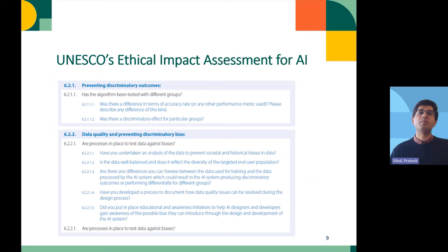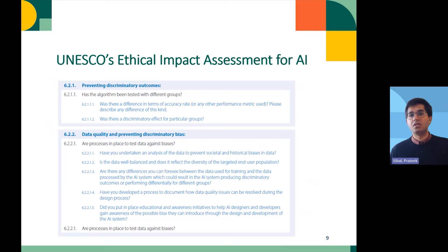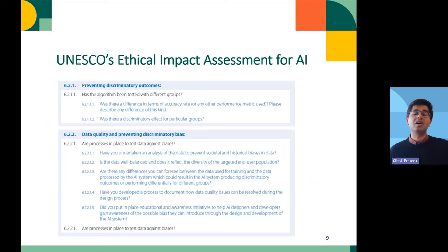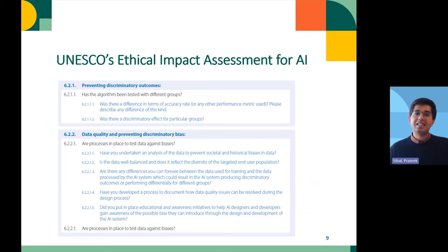Moving on to the alignment with the principles — for instance, the principle of non-discrimination, where we assess whether the algorithm has been tested with different stakeholder groups, and whether an analysis of the training data and testing data has been conducted. Training data and testing data are important ingredients of an AI system, and we need to analyze whether there are biases in these data. These questions help us reflect more deeply on the sources or potential entry points of biases, and I invite you to look at the document for more details.